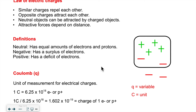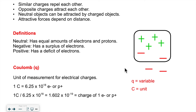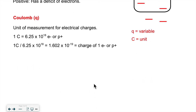Charges are very tiny, so in order to count them we need to group them — much like with atoms, where we use Avogadro's number because atoms are so small we group them in a unit called a mole. There's a similar situation with electricity. There is a unit and a variable called a coulomb. The variable is represented by the letter q (lowercase q), and the unit symbol is C — but they're both called coulomb.